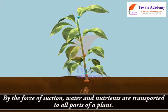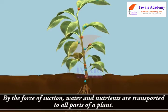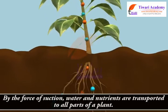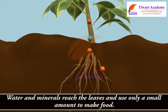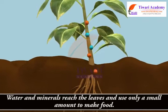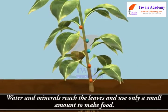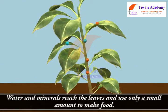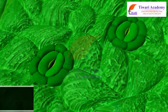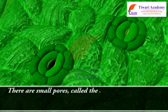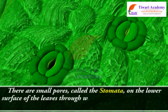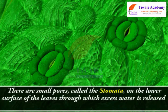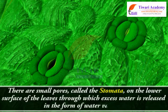By the force of suction, water and nutrients are transported to all parts of the plant. Water and minerals reach the leaves and only a small amount is used to make food. There are small pores called stomata on the lower surface of the leaves through which excess water is released in the form of water vapor.